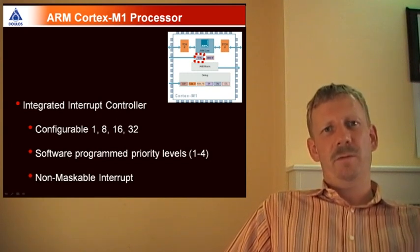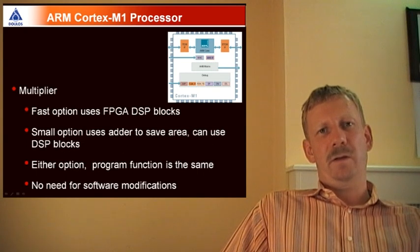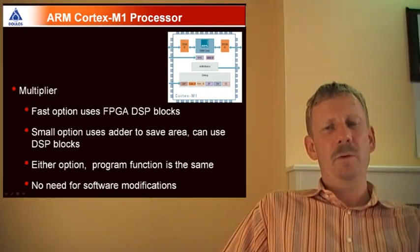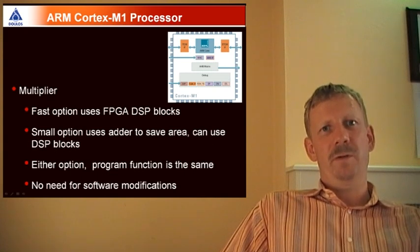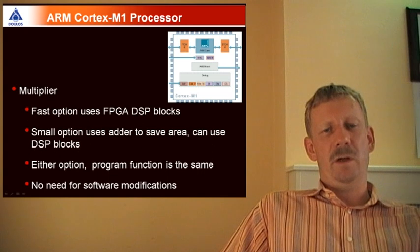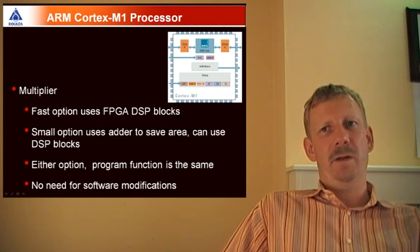One specific feature for the Cortex-M1 is that you can choose between a fast and slower implementation for the multiply instruction. Depending on the resources of your FPGA, you can use DSP blocks to implement a fast multiplier, or if this is not so important for your application, you can implement these instructions with adds.